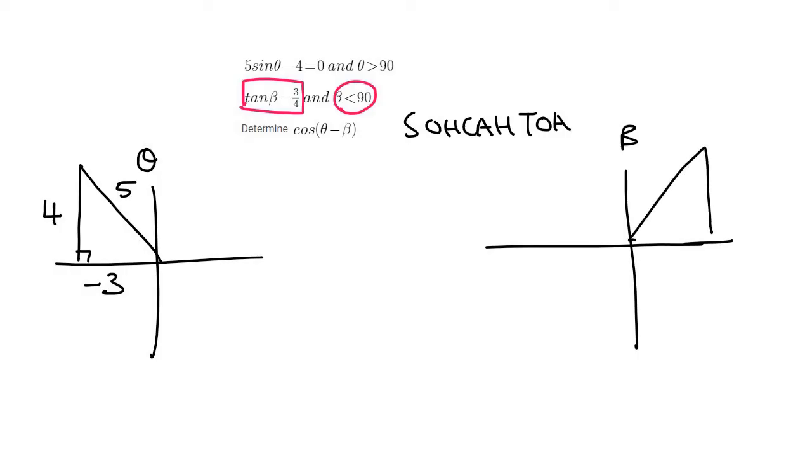Now we can fill everything in. Tan is opposite over adjacent. So the opposite would be 3. The adjacent would be 4. Doing Pythagoras, we should end up with a 5.